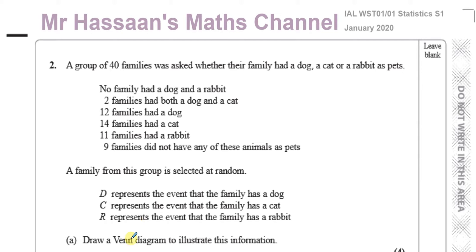Draw a Venn diagram to illustrate this information. There's no family that had a dog and a rabbit, two families had both a dog and a cat, and 12 families had a dog. Those families that had a dog — it doesn't mean only a dog — it includes the ones that have a dog and a cat as well. So that intersection of 2 is included within the dog total of 12.